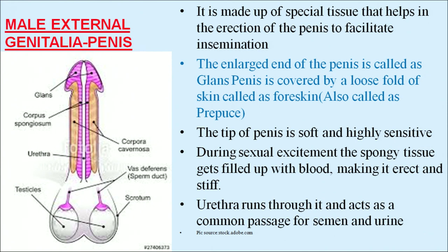The male external genitalia, called the penis, is made up of special tissue that helps in erection of the penis to facilitate insemination. The large end of the penis is called the glans penis, covered by a loose fold of tissue called the foreskin or prepuce. During sexual excitement the spongy tissue gets filled with blood, making it erect and stiff. The urethra runs through it and acts as a common passage for semen and urine.